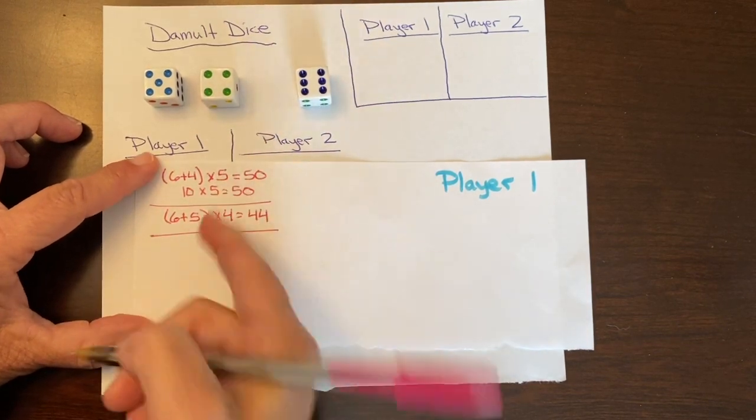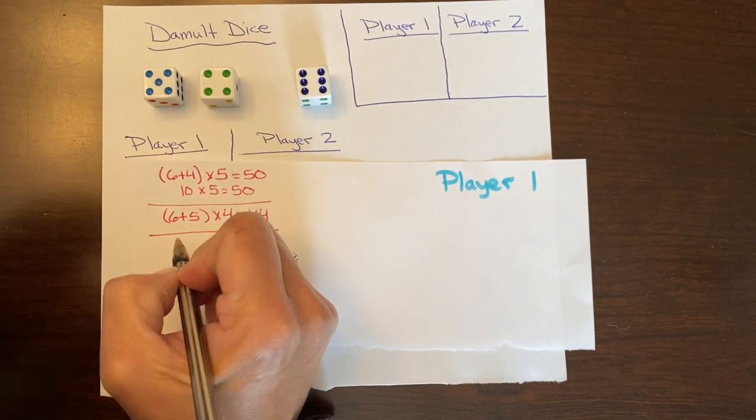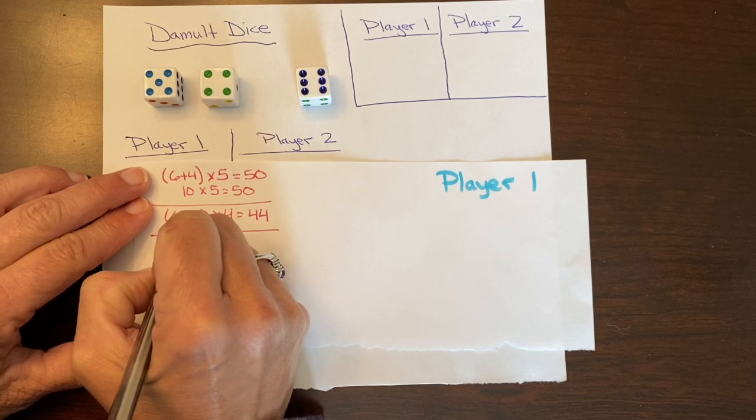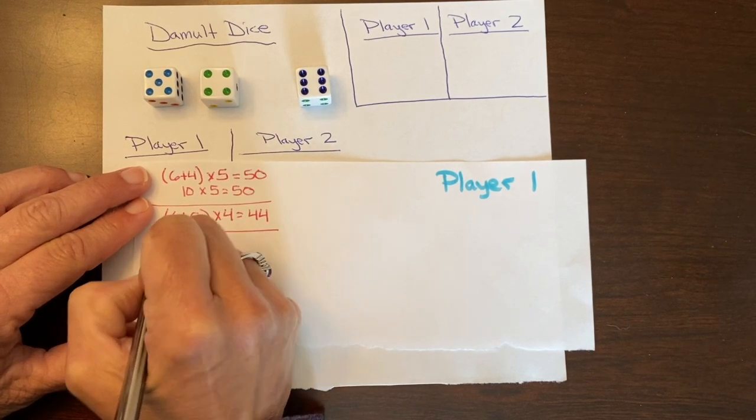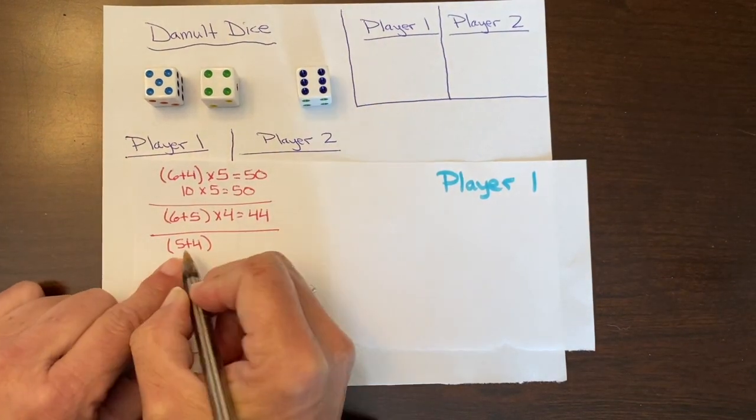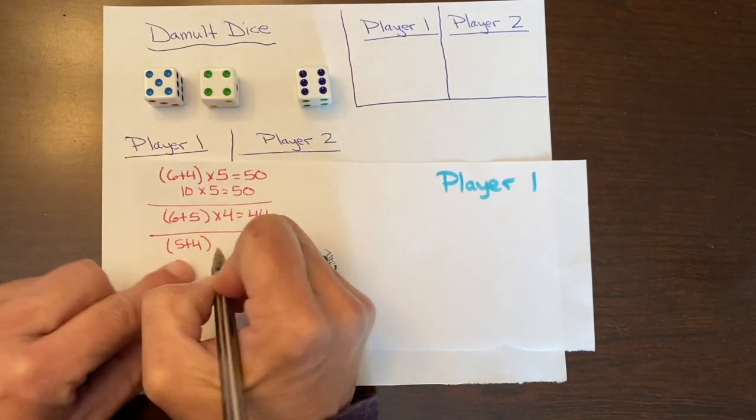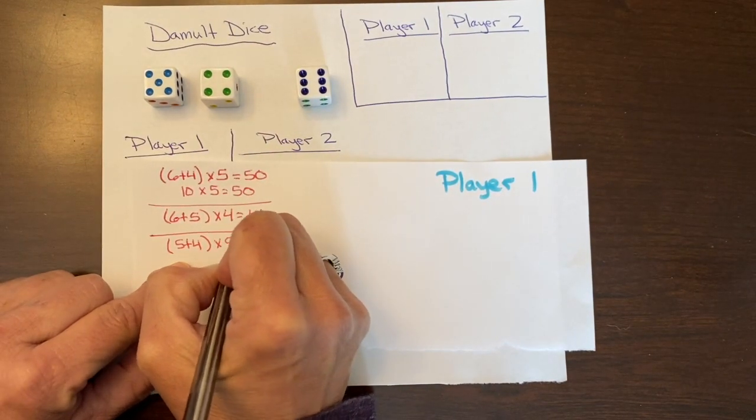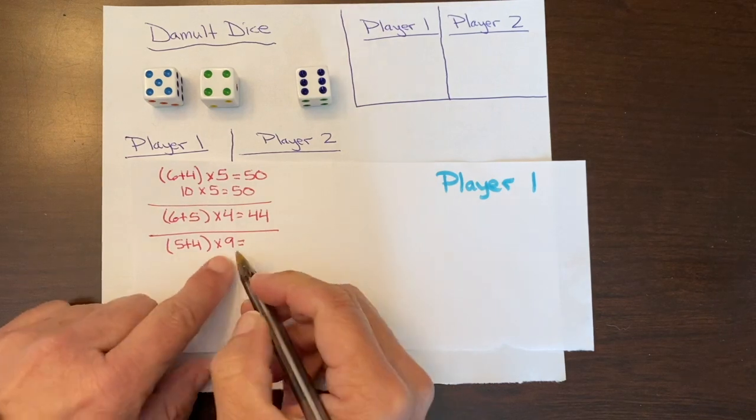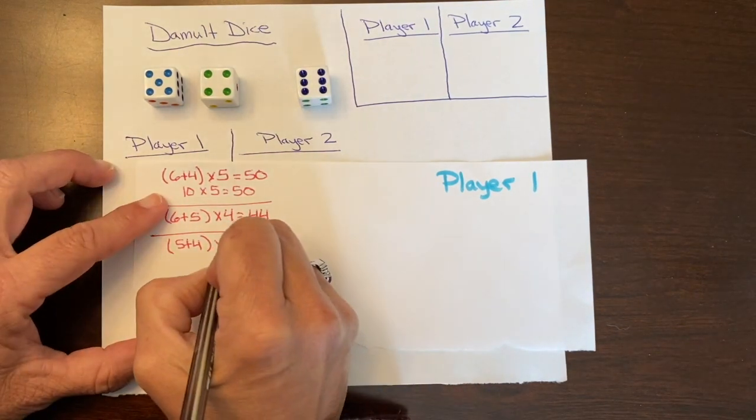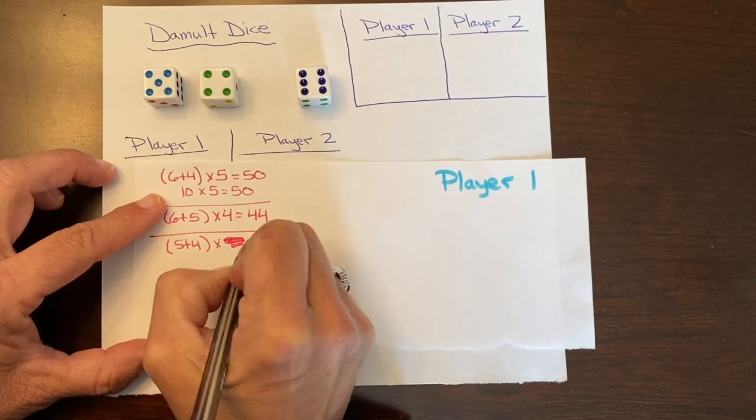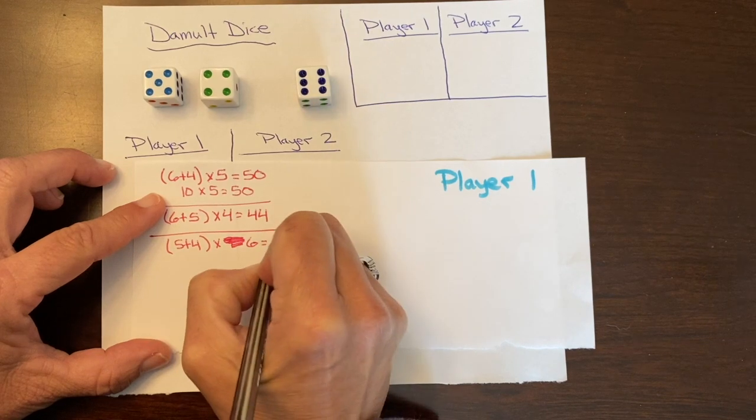I'm going to draw a line there again so I can separate them out. Just for me visually it helps me. 5 plus 4, put in parentheses—that's what I'm doing first. That would be 9. 9 times 6. Oh, I wrote 9 because my brain said 9. 9 times 6 equals 54.